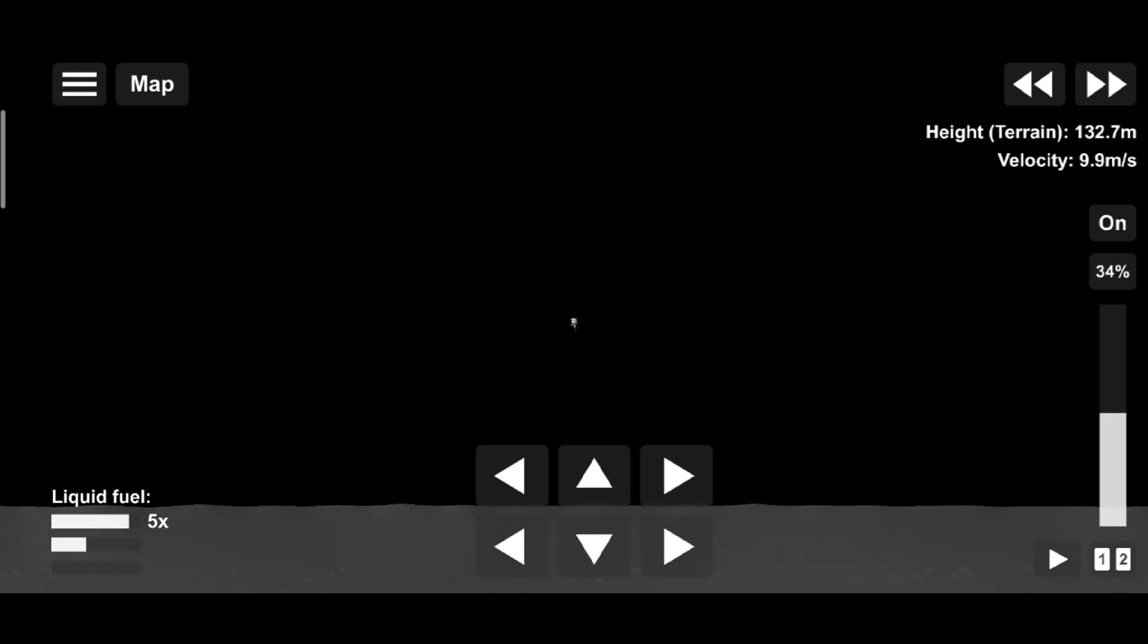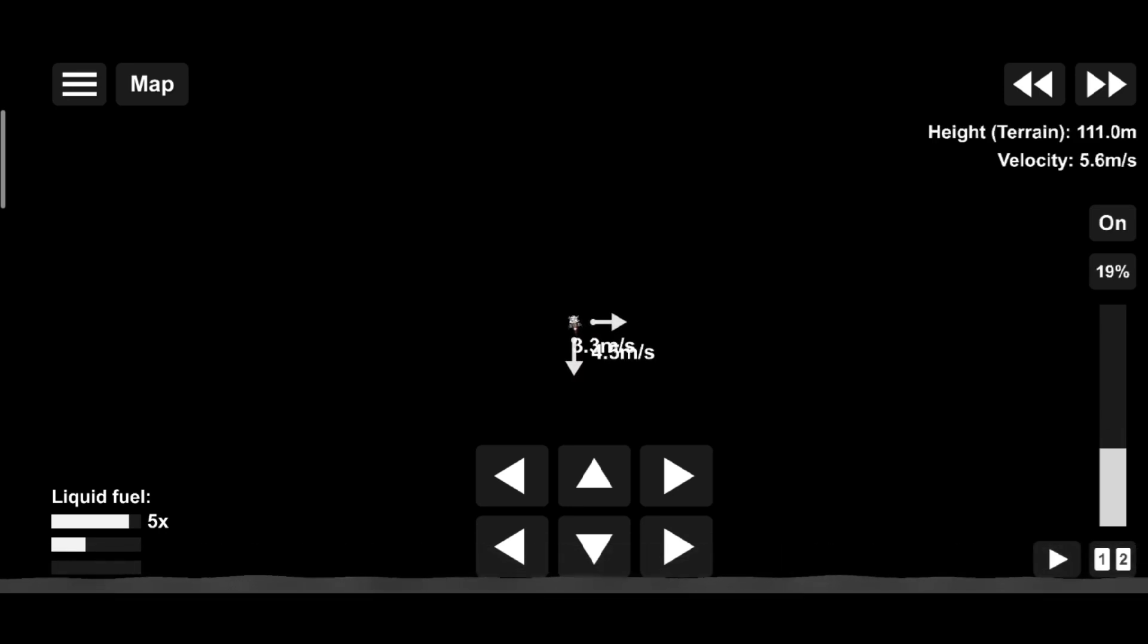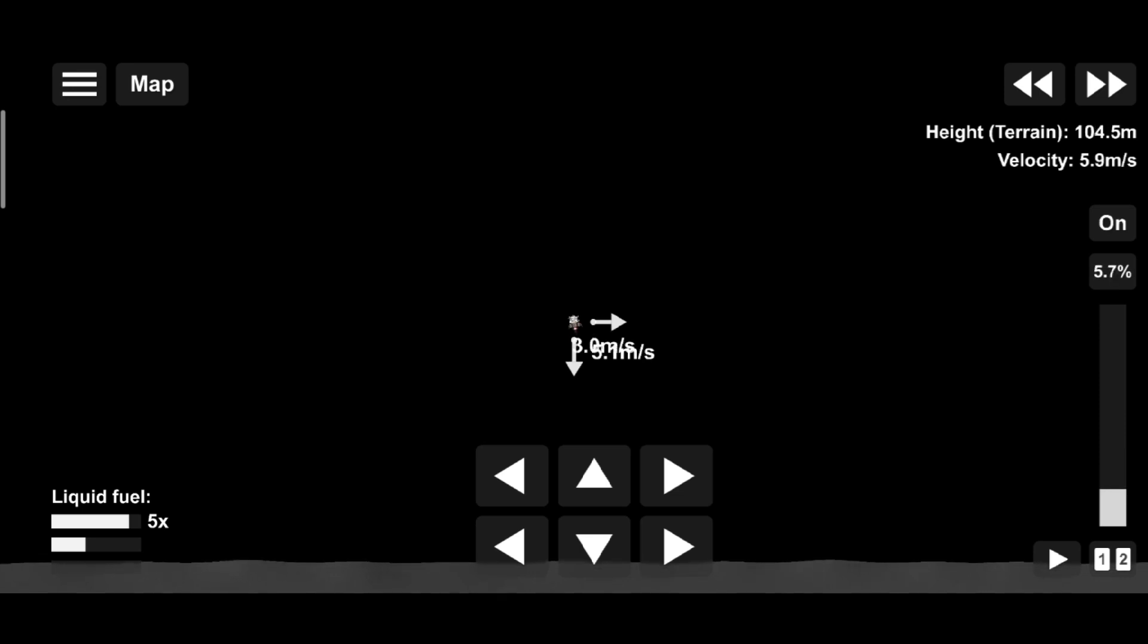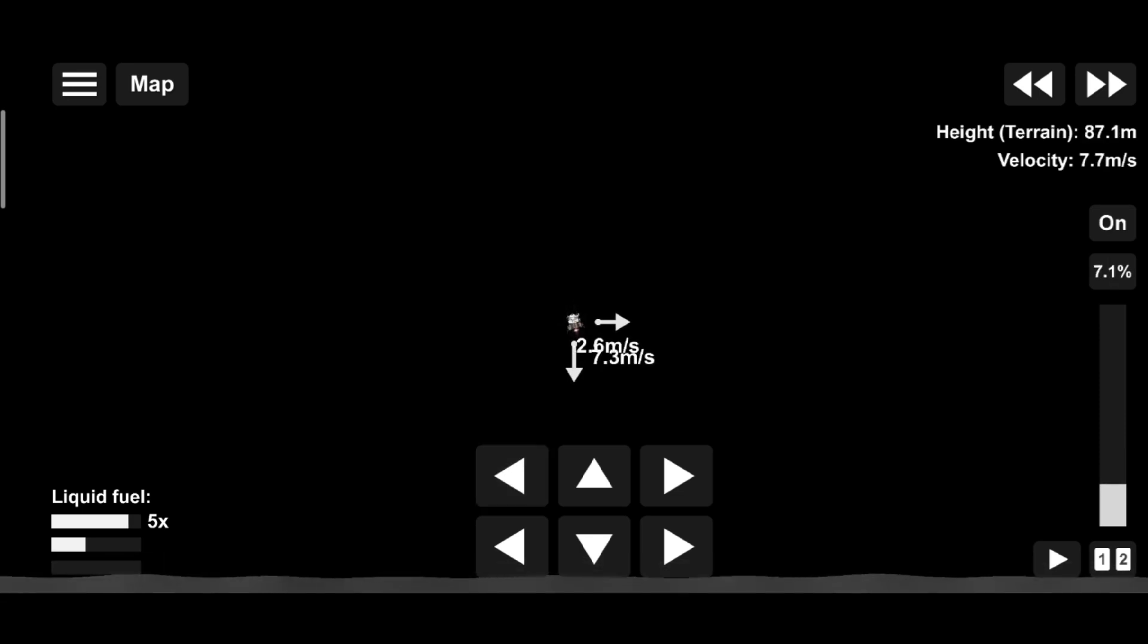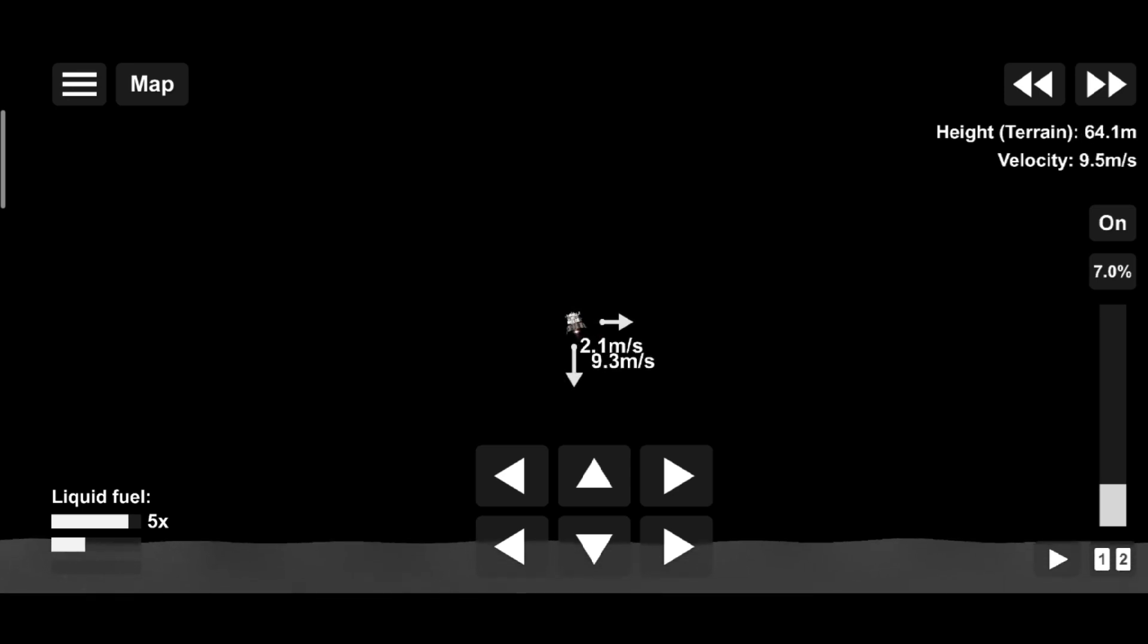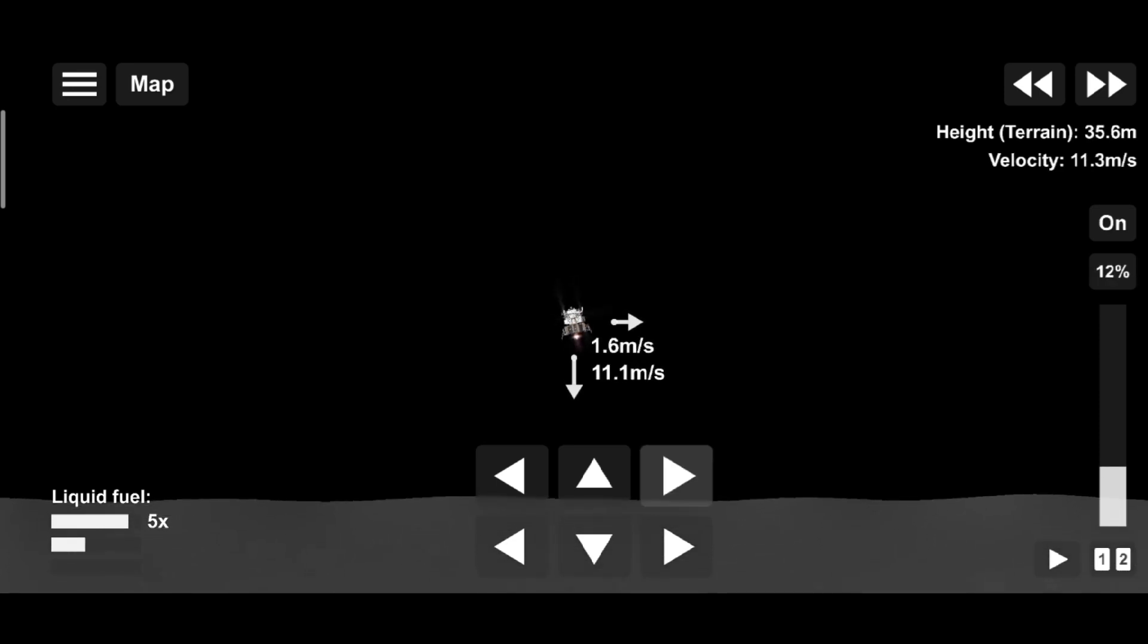4.5 down. 2.5 down, 220 feet. 5 and forward. Coming down nicely. 200 feet. 4.5 down. 5.5 down. 100 feet. 3.5 down. 9 forward. 75 feet. That's looking good. Down a half.